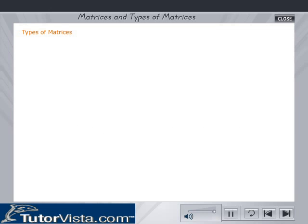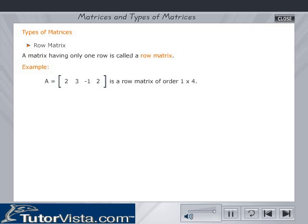Let us now discuss the types of matrices. A matrix having only one row is called a row matrix. A equals matrix 2, 3, minus 1, 2. It is a row matrix of the order 1 by 4.